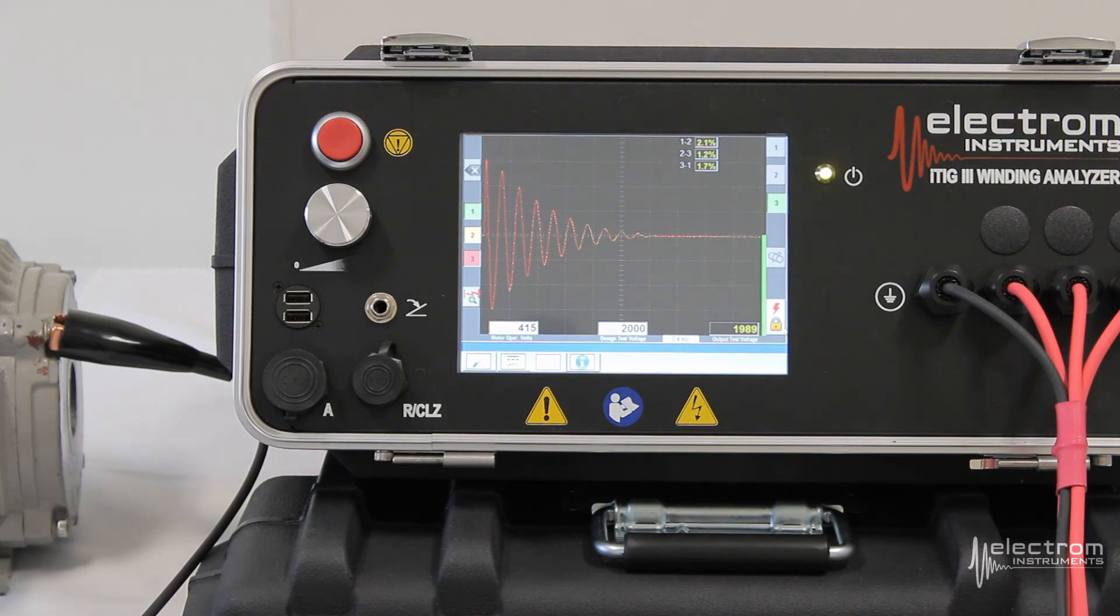In this case we got 2.1% difference between phase 1 and 2, and phase 2 and 3, and 3 and 1. We're both less than 2%. At any rate they're all very nice, low percentages. There are no reasons to expect any issues here.